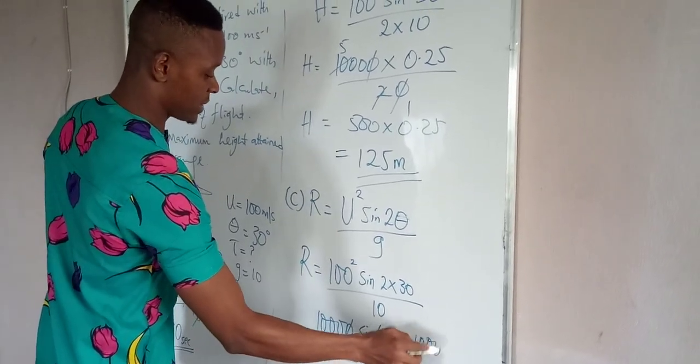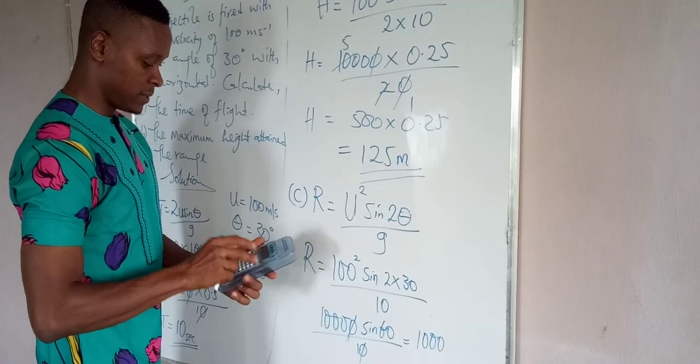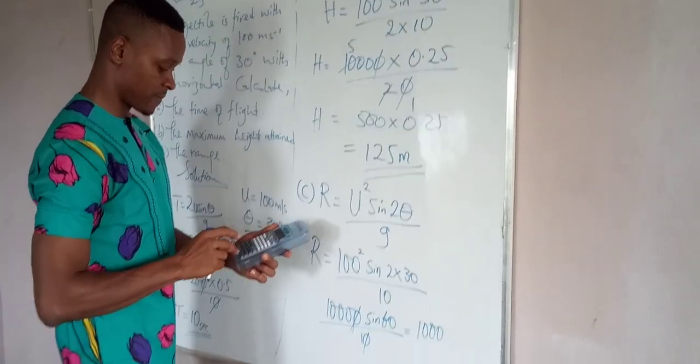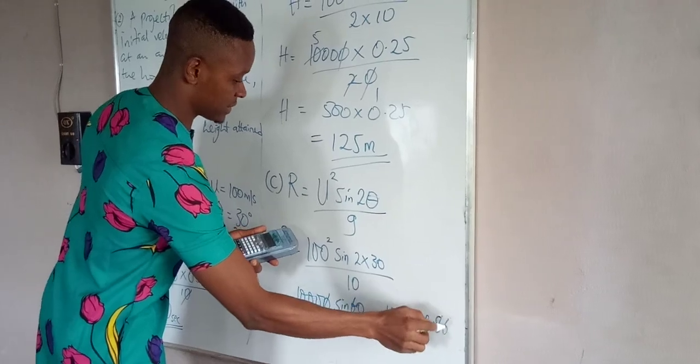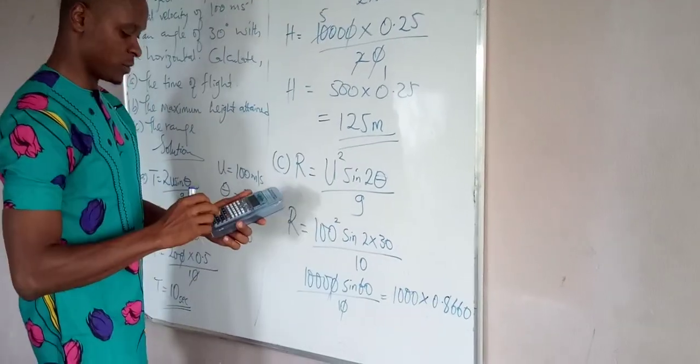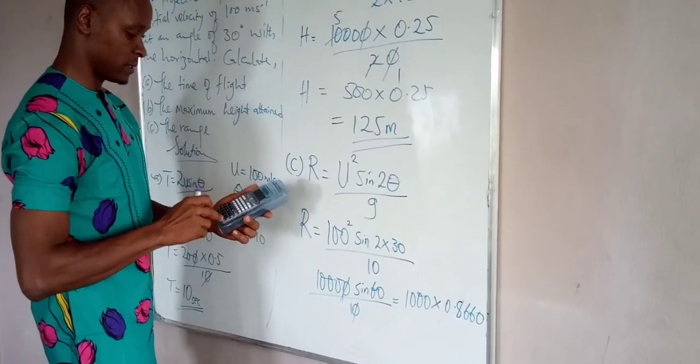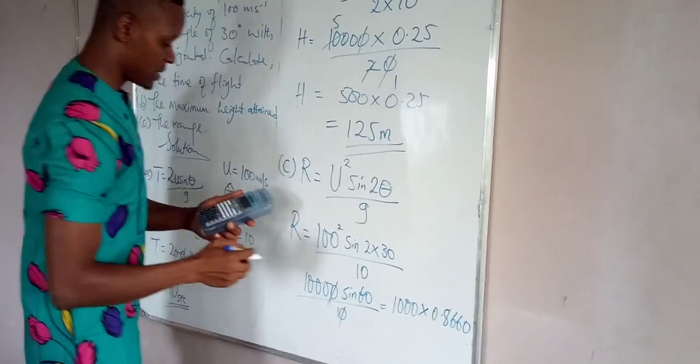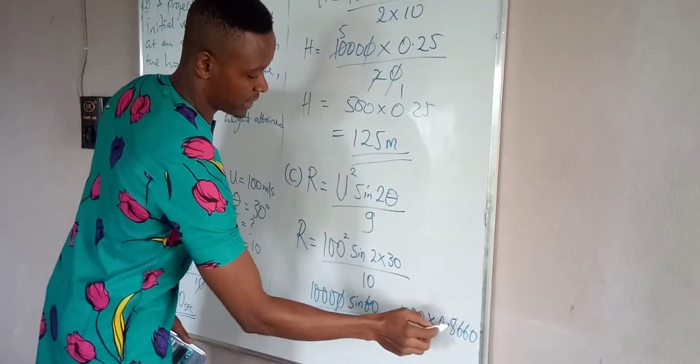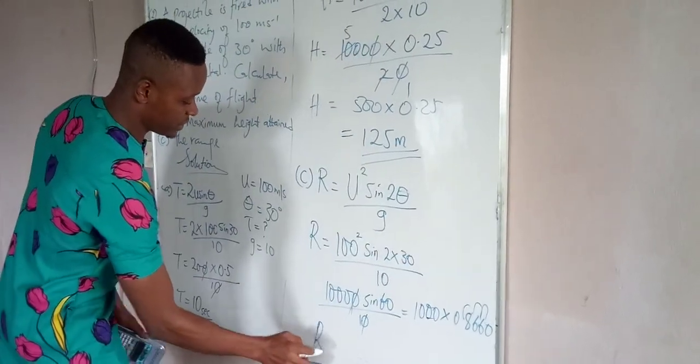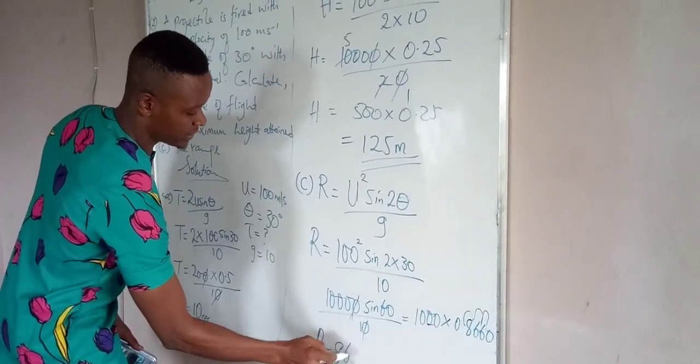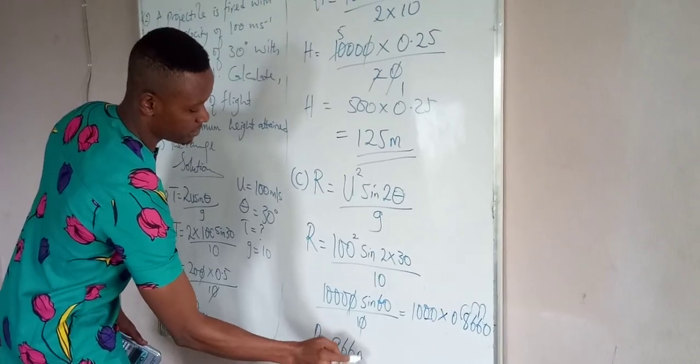Giving us 1000. Sin 60 is 0.8660. Multiply this by 1000, that will give us 8. If we move the decimal 3 times: 1, 2, 3, that will give us our range being 866 meters.